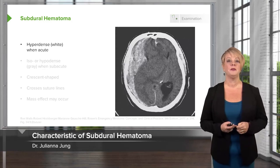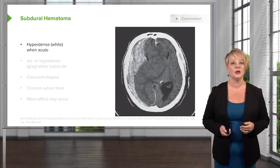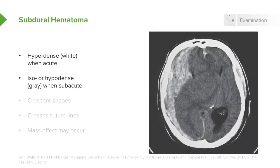Let's move on to subdural hematoma. Subdurals also appear hyperdense or white when they're acute, but they can become isodense or gray when they're more subacute, as subdurals accumulate more gradually over time. In many cases, if they're chronic, they can be hard to see because they're basically the same density as the brain. Unlike epidurals, subdurals are crescent-shaped — convex on one side and concave on the other, sort of like a crescent moon. Subdurals will cross the suture lines because they're inside the dura, and the blood can intercalate all around the brain.